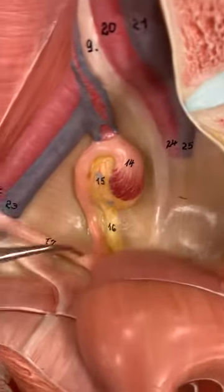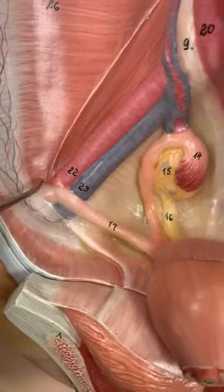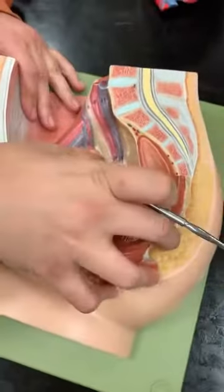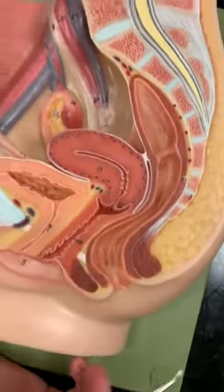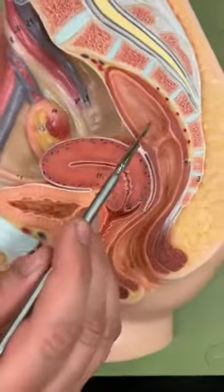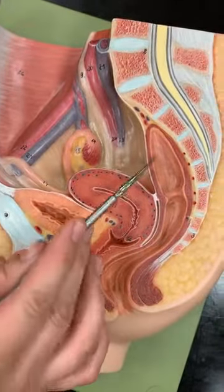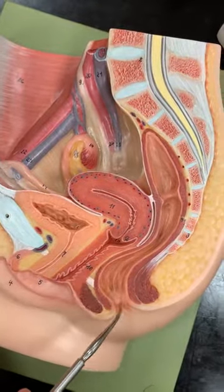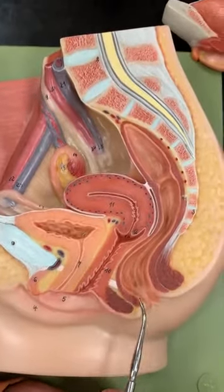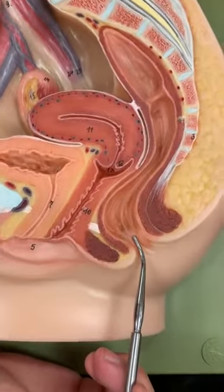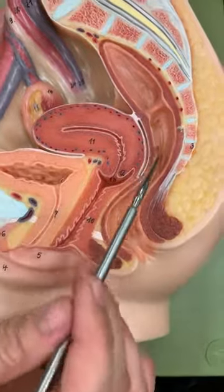Out here you have your broad ligament and then this is your round ligament. Now we're going to open it up and do the internal anatomy. When you open up the model, this again is the rectum — it's straight — and then the anal canal. Note that you do have internal and external anal sphincters that we discussed in the digestive system.